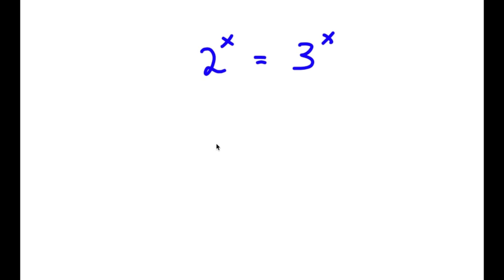In this problem, I have 2 to the power of x is equal to 3 to the power of x. I obviously want to find the value of x here.